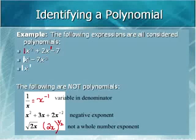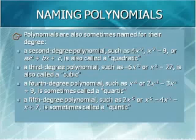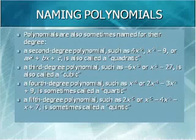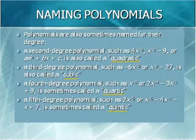Next we're going to look at the names for polynomials. Polynomials are sometimes named for their degree, which is the highest exponent in the polynomial. When the highest exponent is 2, it's called a quadratic. When the highest exponent is 3, it's called a cubic. A fourth degree polynomial is called a quartic, and a fifth degree polynomial is called a quintic. Anything higher than degree 5 is usually just referred to as a polynomial.